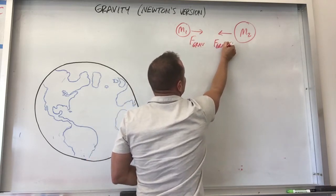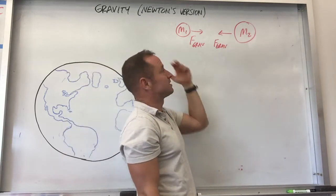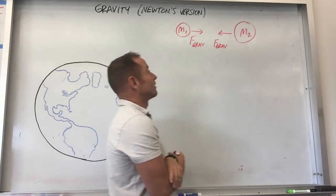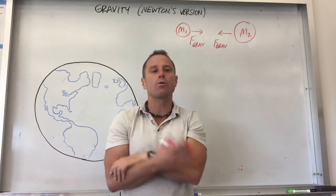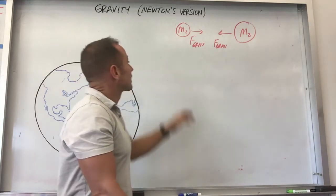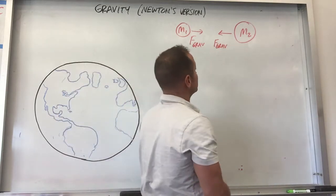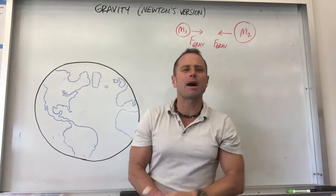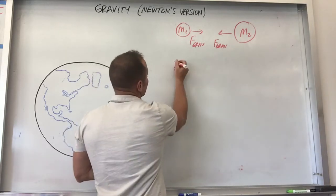The forces are equal and opposite. It doesn't matter if these things are two different masses — they actually pull equally on each other. For every action, there's an equal and opposite reaction. So the Earth pulls on you with your own weight, and you pull on the Earth with exactly your weight also. That's equal and opposite force, so don't be faked out if you're given a situation where the masses are actually different. What Newton figured out was not really much about how it worked, but he figured out how strong the force is.